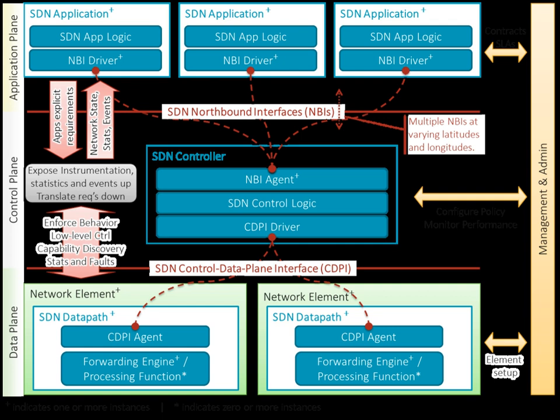A key issue when designing a distributed SDN control plane is deciding on the number and placement of control entities. An important parameter is the propagation delay between controllers and network devices, especially in large networks. Other objectives include control path reliability, fault tolerance, and application requirements.